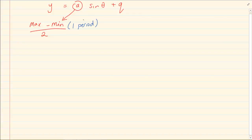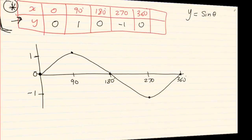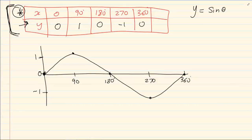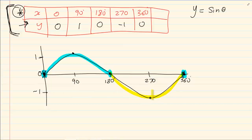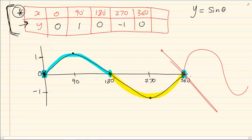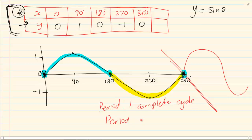One period is one complete cycle. In our mother graphs, the period is how long it takes to start from a certain point and end at that same point going through its complete cycle. For a sin graph, I started at 0 and ended at 360 degrees — y is 0 at the start and y is 0 at the end. We don't stop at 180 because that is not a complete cycle; the graph has gone up then down, and only repeats after 360. So the period of a sin graph is 360 degrees.